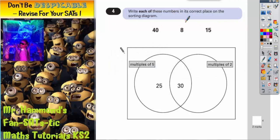Question 4: Write each of these numbers in its correct place on the sorting diagram. We've got 40, 8 and 15. This is our sorting diagram.